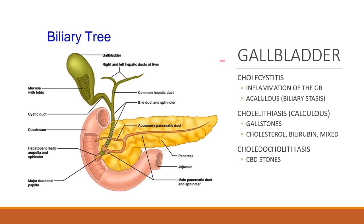Your gallbladder is a sac that stores the bile created by your liver. When you eat, it contracts and squeezes bile into the common bile duct, and then that empties into the duodenum. The bile acids and salts help to digest food.